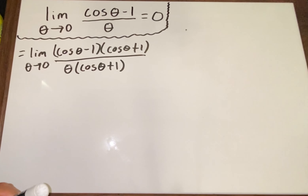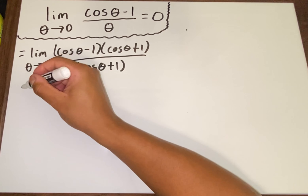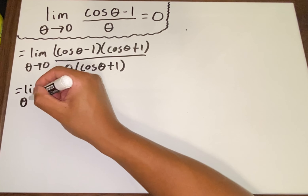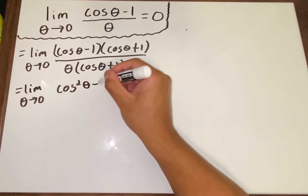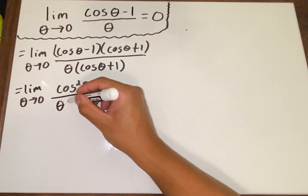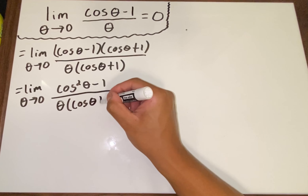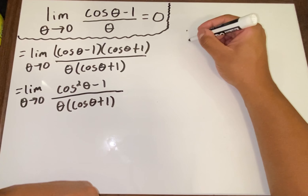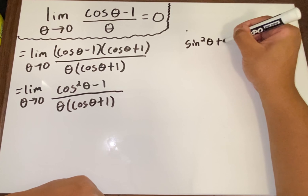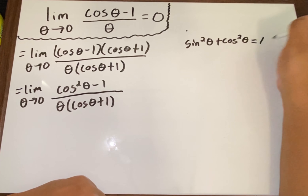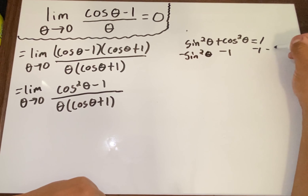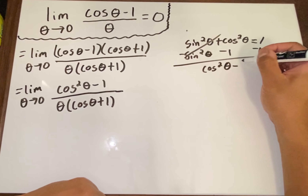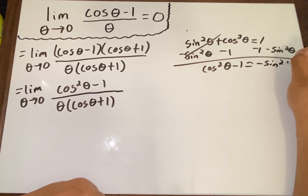We're left with cos²θ minus 1 on top. So this equals the limit as θ approaches zero of cos²θ minus 1 over the same denominator. That didn't quite help yet, but we can use the Pythagorean identity: sin²θ + cos²θ = 1. Subtracting sin²θ from both sides gives us cos²θ minus 1 = negative sin²θ.